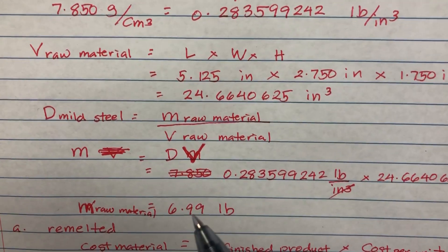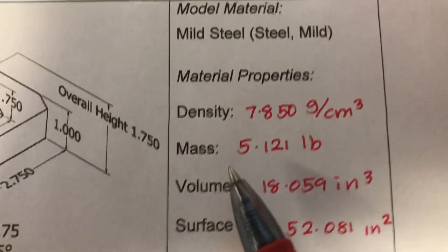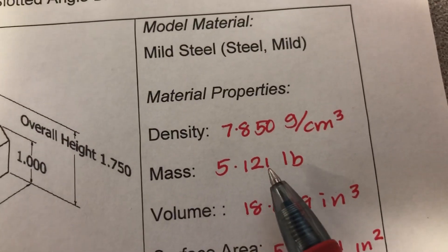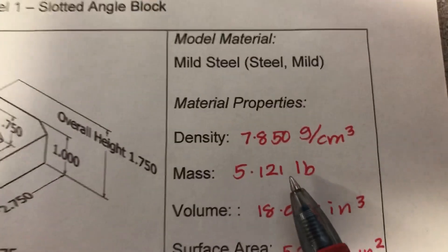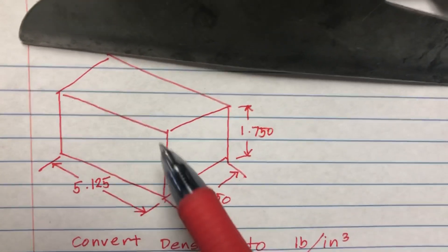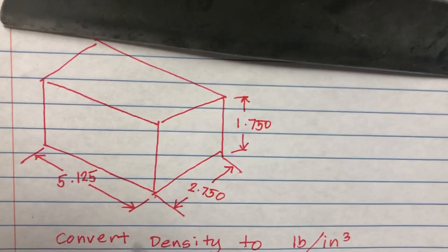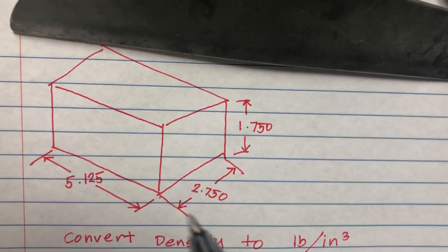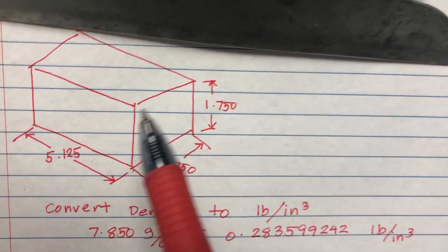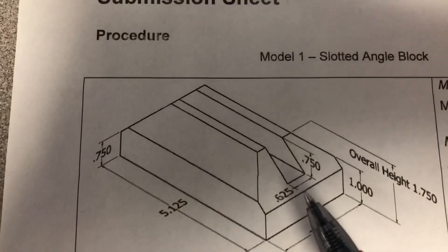Compare that to the mass of the finished product, which is 5.121 pounds — considerably less, of course, because we used a CNC mill like the one you use with Mr. Shin to shave off parts of the block to get the final shape.